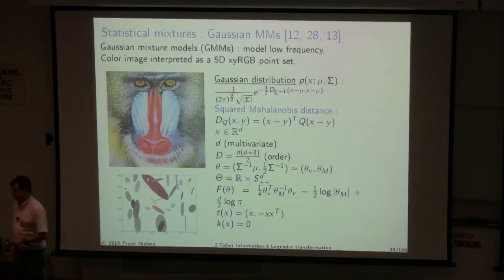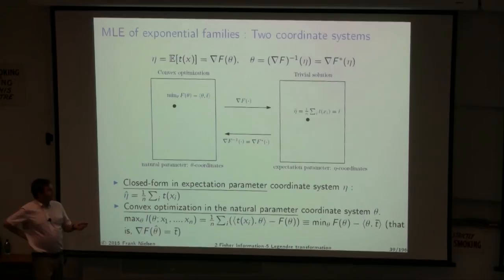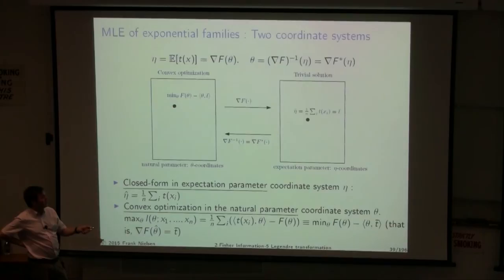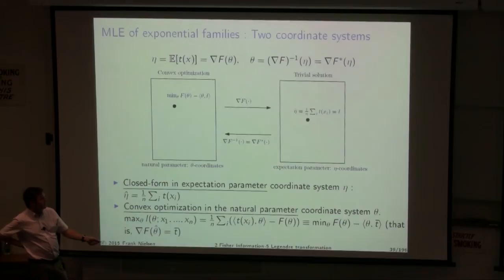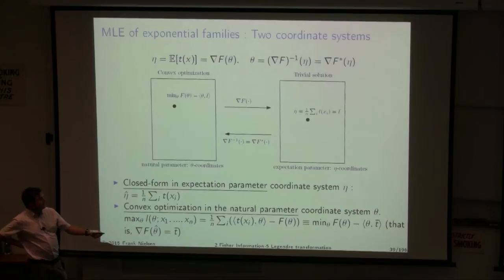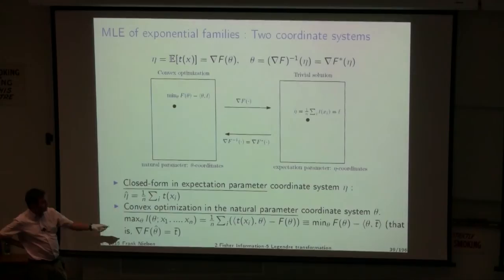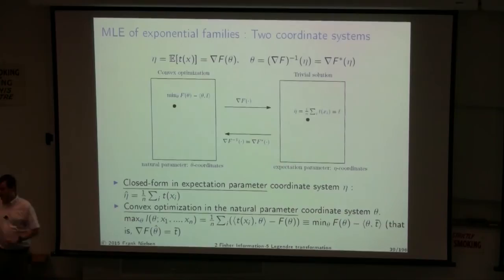The problem is converting from moment parameters back to natural parameters: if the inverse of ∇F is not in closed form, we cannot get θ in closed form. Some algorithms therefore stay in the moment parametrization as long as possible. Exponential families are also universal: any smooth density can be approximated either by a mixture of exponential families (e.g., mixture of Gaussians) or by a single exponential family with chosen sufficient statistics in a polynomial or polylog basis, though the log-normalizer integral may not be computable in closed form.